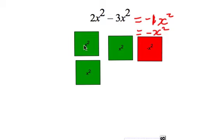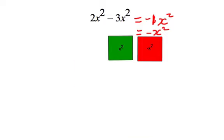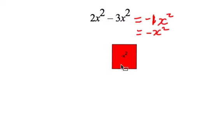So now what we're going to do is we're going to take away our 3x squareds, so we took away 1, 2, and 3, and what we're left with then is negative x squared, and that's what we found here before.